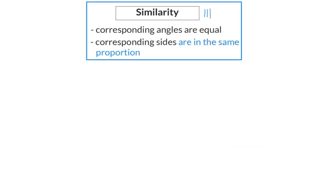For similarity of most shapes, both of these should be known, but for a triangle, only one or the other is needed to be able to say that the triangles are similar.